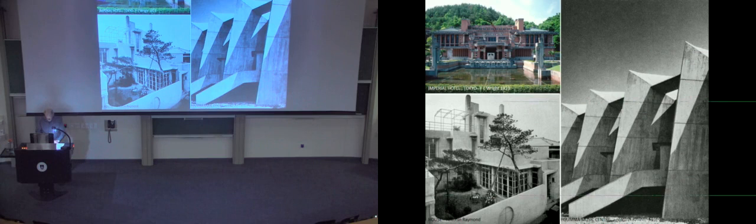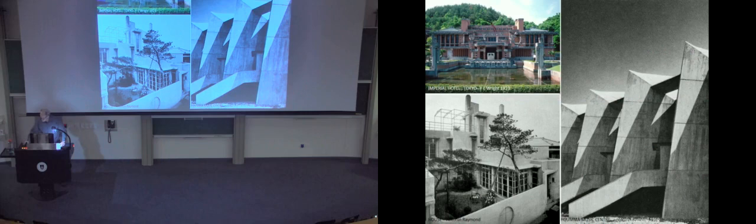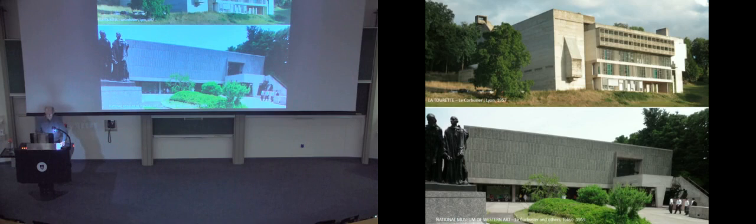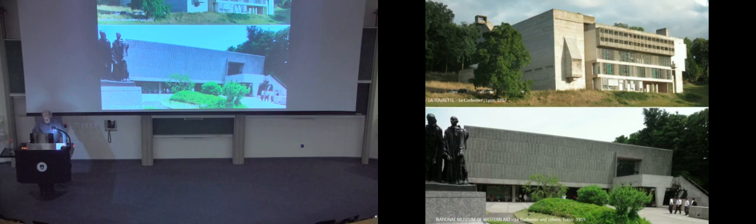Young Japanese architects also travelled to Europe and studied the new buildings there. Mixed in with the nationalistic Japanese-style buildings were a number of the new rational method. The main player on the world stage of the new architecture was Le Corbusier, who produced his sculptural concrete Unité d'habitation in Marseille and other off-shutter concrete buildings in the 1950s, like La Tourette monastery in 1957. He was also commissioned to design the National Museum of Western Art in Tokyo, assisted by two or three very fine young Japanese architects, so his influence on Japanese architecture was really considerable.